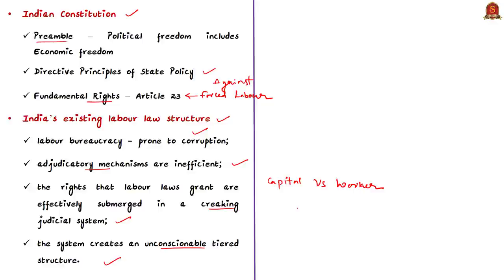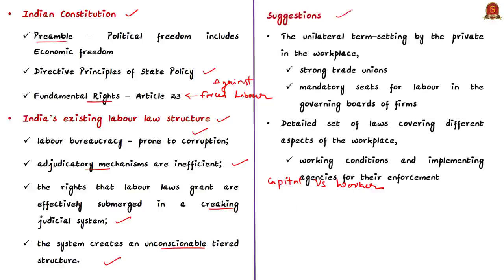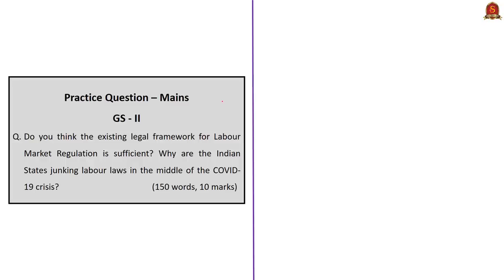The unilateral term-setting by private employers in the workplace must be exchanged with equal participation of laborers in the legislation of labor laws itself. This can be done through strong trade unions and mandatory seats for labor in the governing boards of industries. There must be a detailed set of laws covering different aspects of the workplace, working conditions, and strong implementing agencies for enforcement. The displayed practice question will be discussed at the end of the session. Now let us proceed to the next news article analysis.